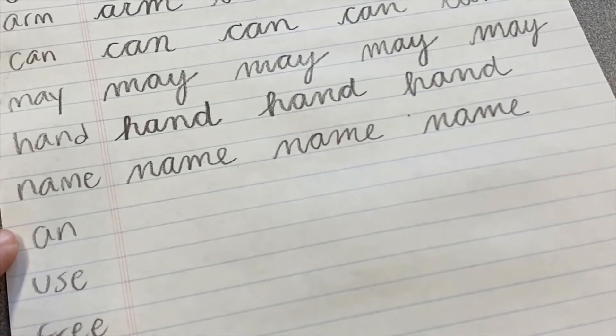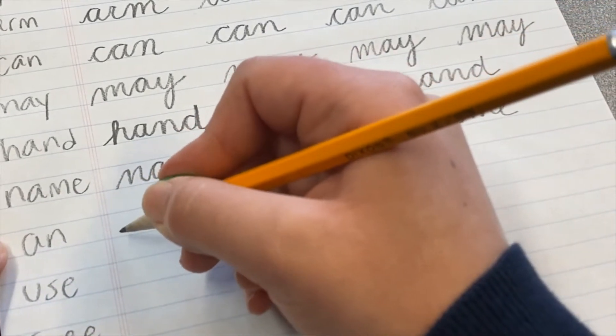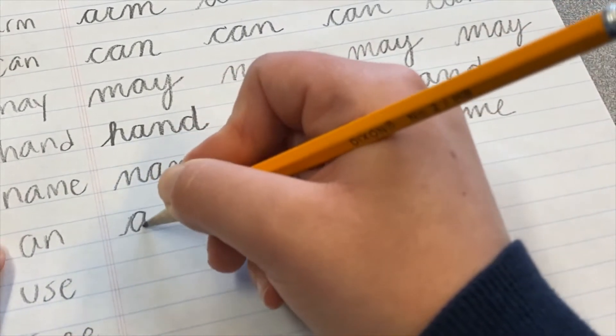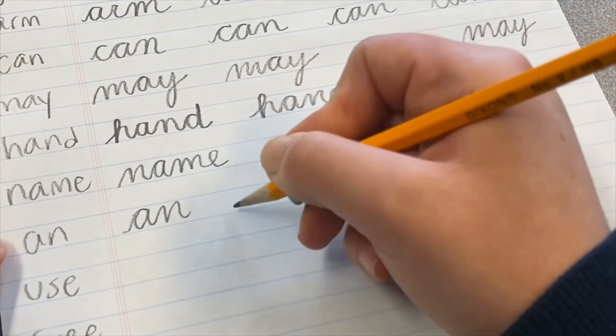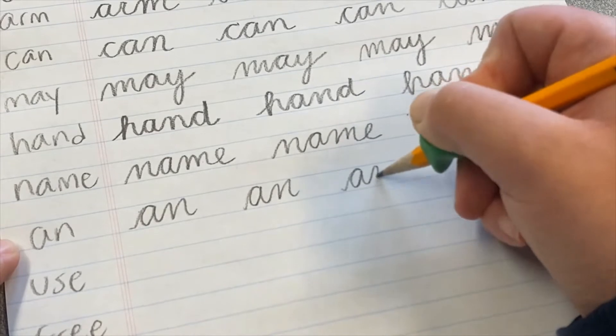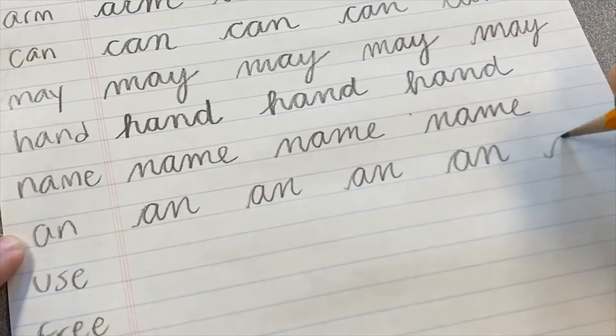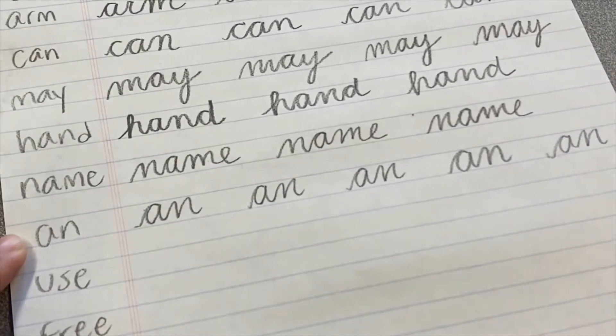And we're zooming right along to the word an. A-N. So that's just an A and an N.